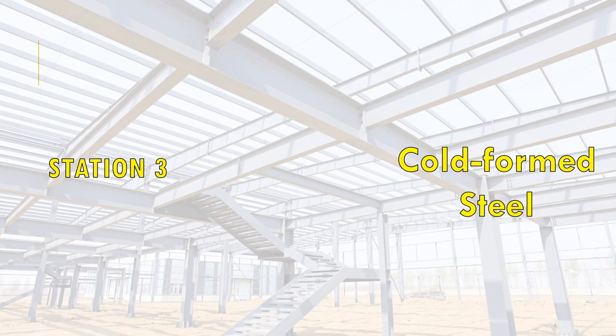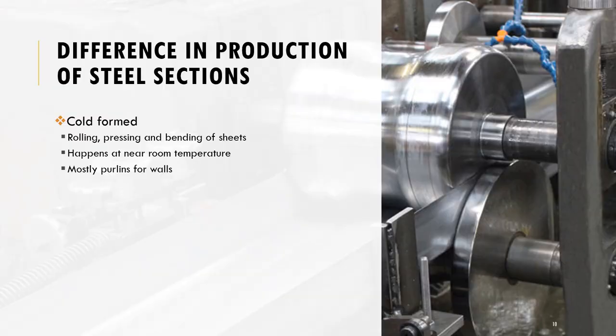Moving on to cold formed steel: this is a steel type where you form steel through rolling, pressing, and bending of sheets, and this typically takes place at room temperature. There's no need to heat or melt the steel. The rolling, pressing, or bending of the sheets takes place at room temperature, and the products that result from cold formed production are mostly purlins, used as wall studs.